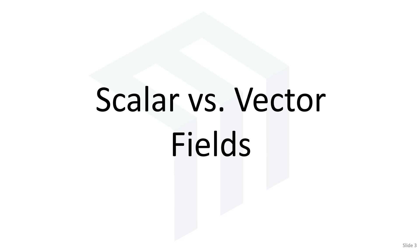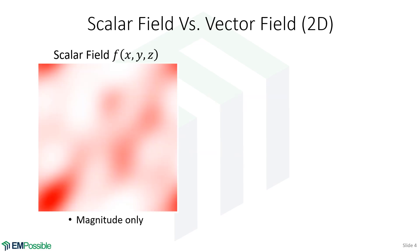Scalar versus vector fields. We start our discussion with a scalar field. A field is just a function. And in the context of electromagnetics, we're talking about something that is a function of position — X, Y, Z for Cartesian coordinates. A scalar field simply has a single number associated with every position. So if we plot a scalar function, it looks something like a cloud.